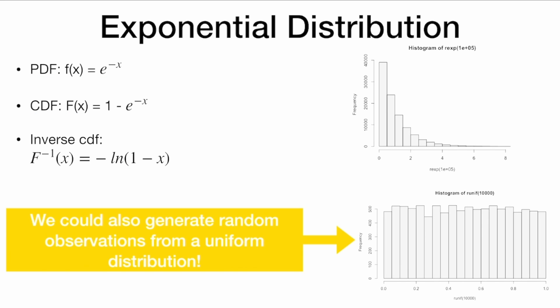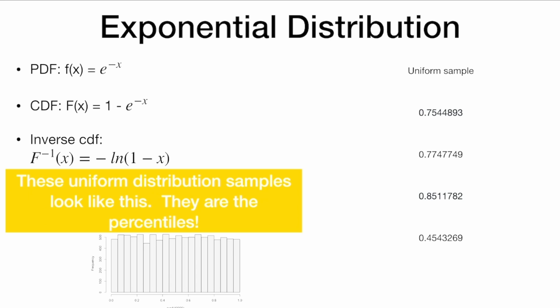However, we could also use the method we're learning, inverse transform sampling, and generate random observations from a uniform distribution, which look like this. So these uniform distribution samples, if we looked at the data, look like this. These are random percentiles between 0 and 1.